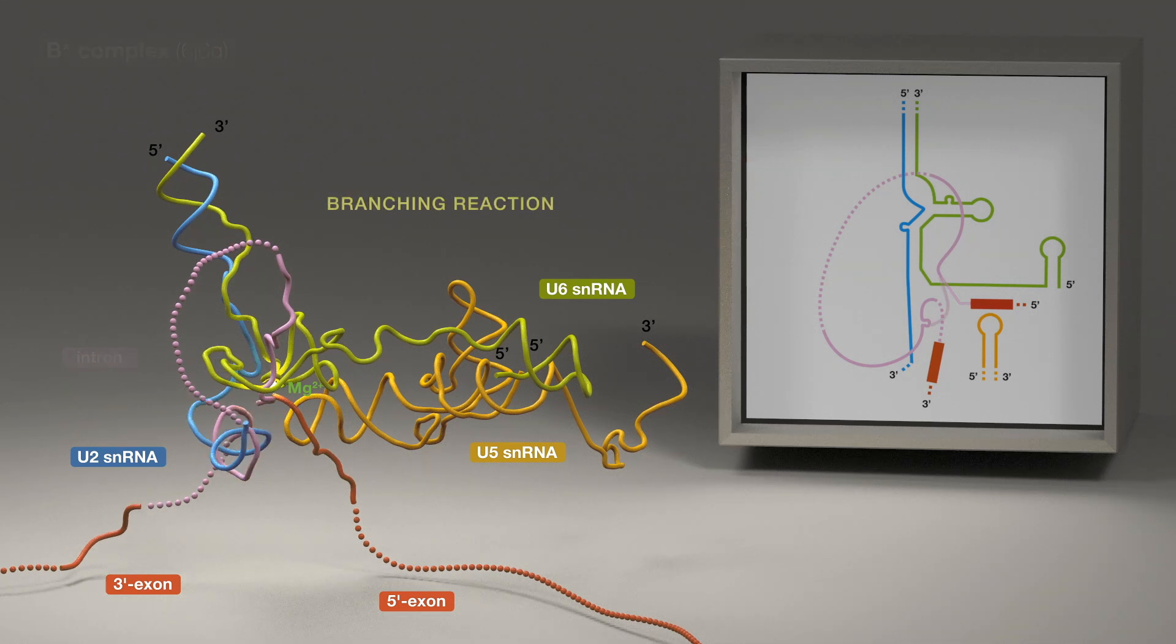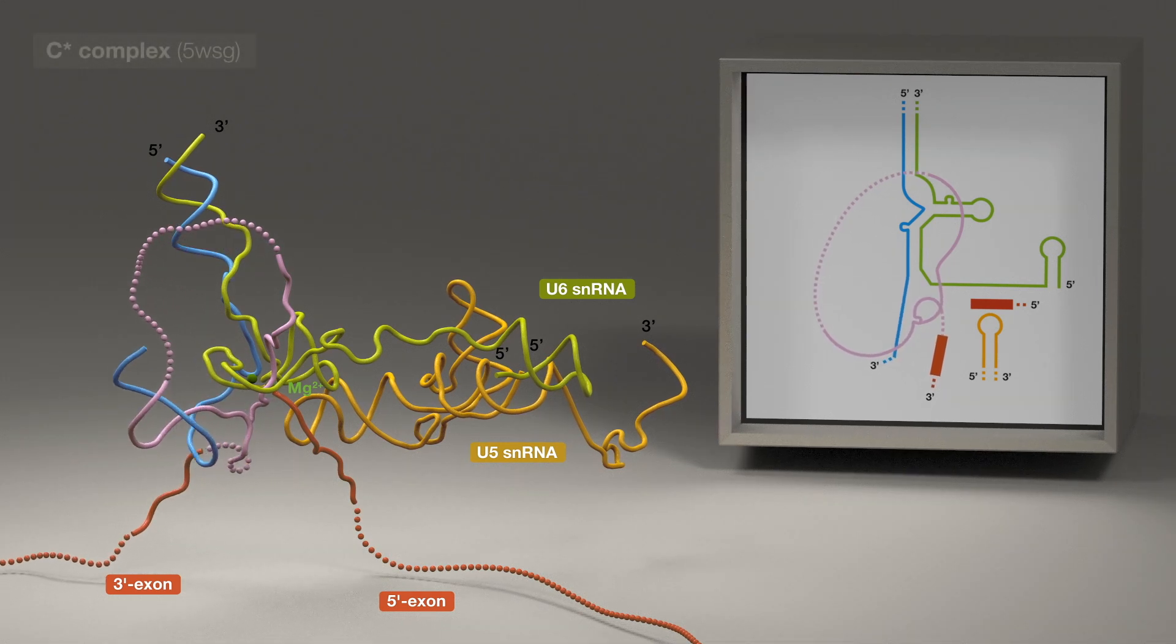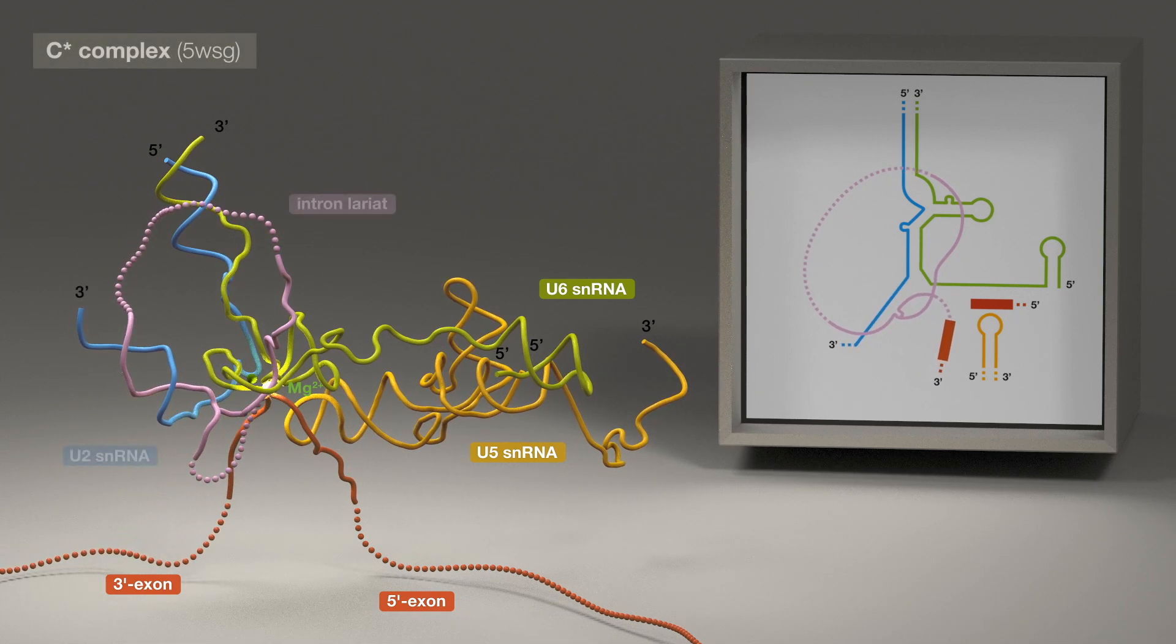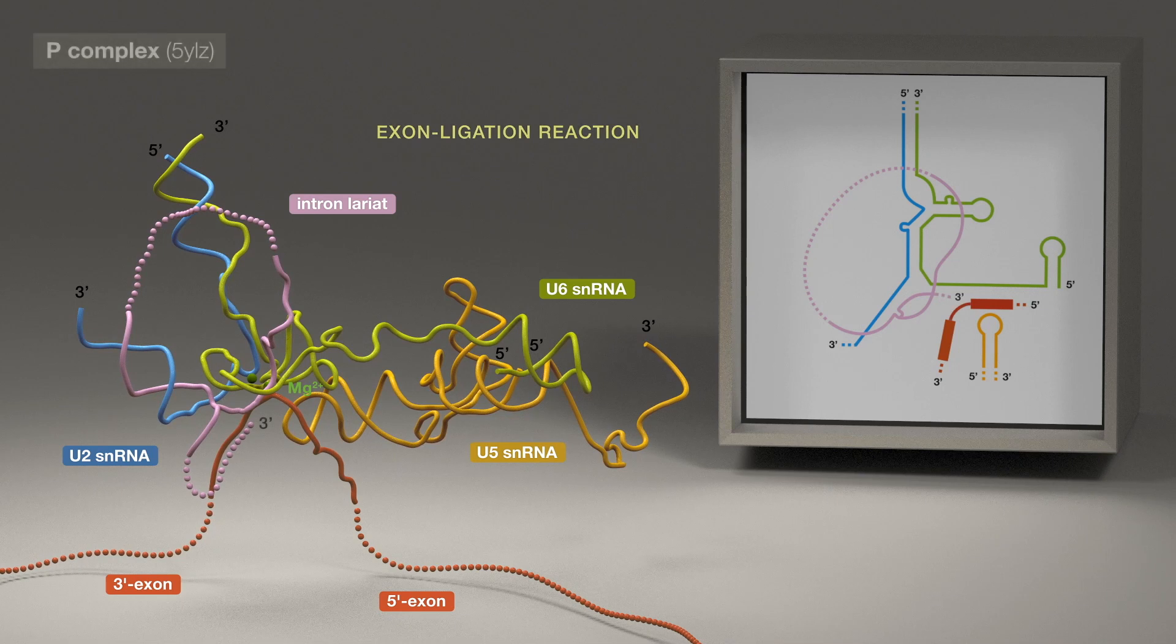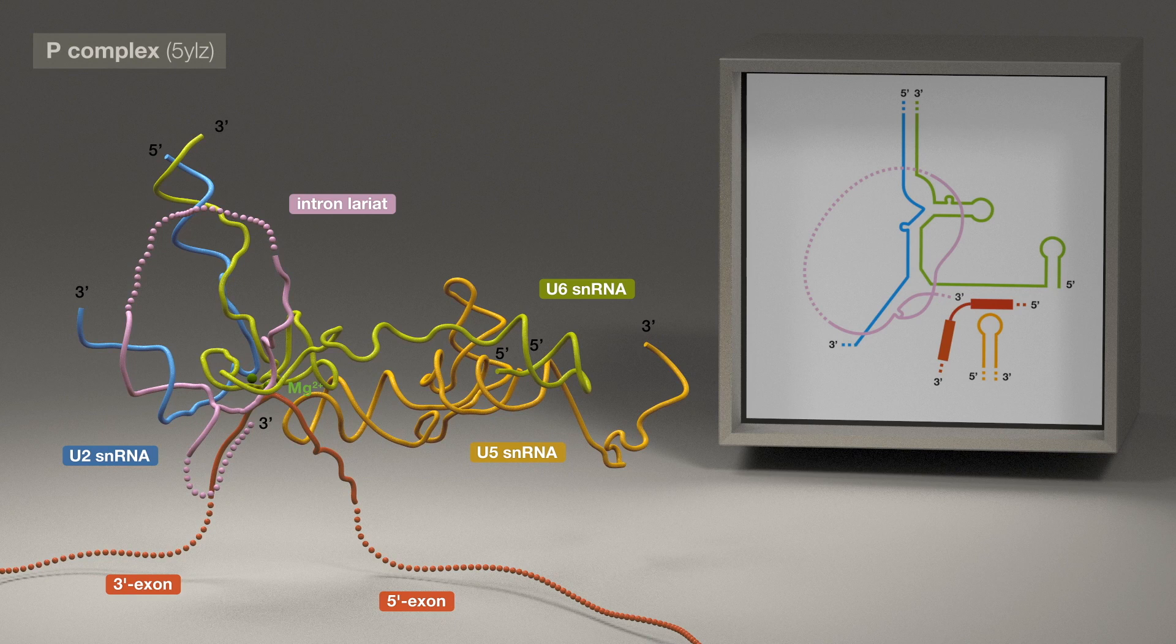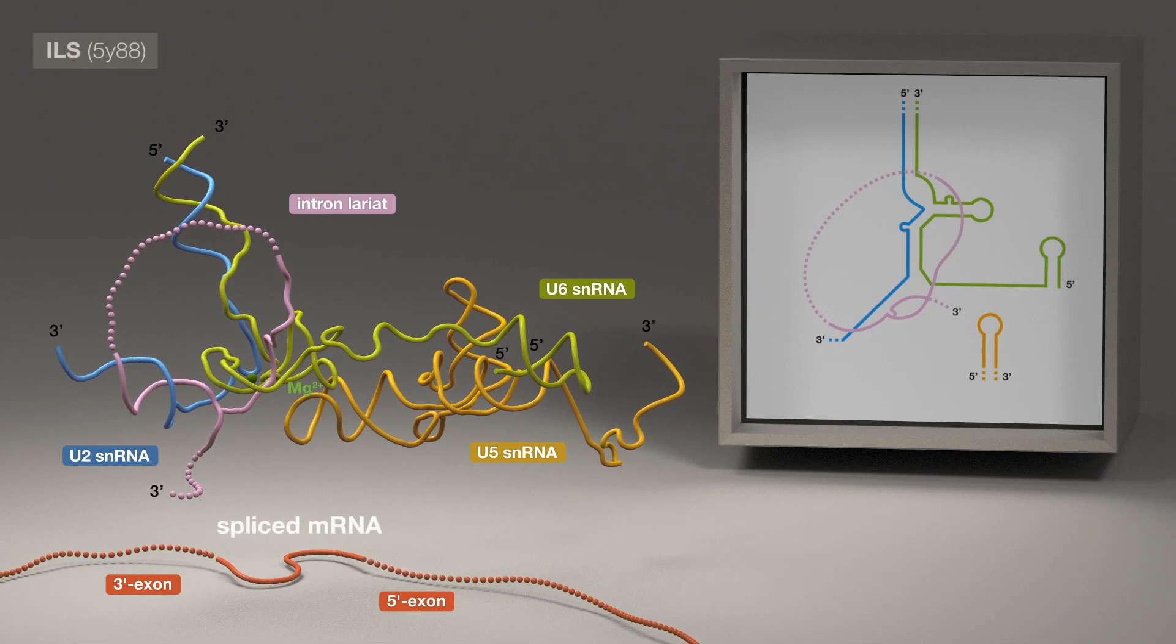From B-star to C, RNA remodeling is minor as the branching reaction gives rise to intron lariat. Major remodeling is again evident from C to C-star as the lariat junction is removed from the active site to make room for the 3' splice site reactant. From C-star to P, movements in spliceosomal RNAs are again minor as this reaction ligates the exons and gives birth to the mature spliced mRNA. Finally, during the P to ILS transition, protein components act to eject spliced RNA from the spliceosome.